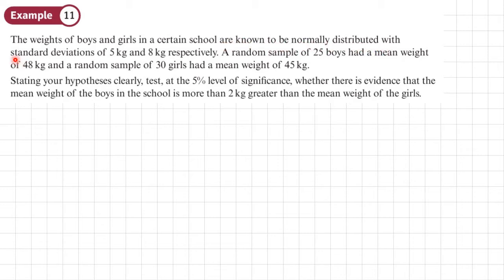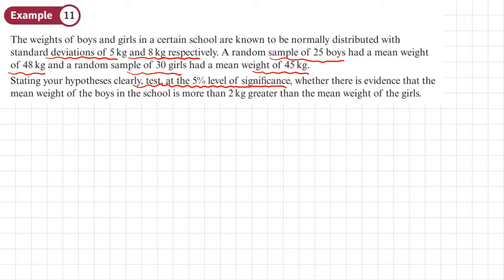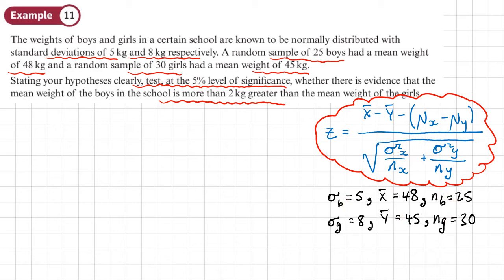Example 11 uses the same data: standard deviations 5 kg and 8 kg, sample of 25 boys with mean 48 kg, sample of 30 girls with mean 45 kg. Test at the 5% significance level whether there is evidence that the mean weight of the boys is more than 2 kg greater than the mean weight of the girls. This is very similar to the last question apart from that last condition.